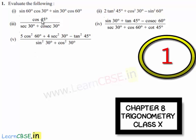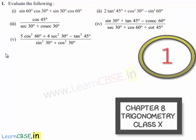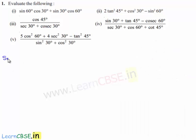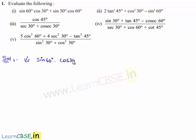Moving on to the first question: evaluate the following. Here he has given 5 bits, so let us find the solution individually. Now finding the solution for the first bit: the question is sin 60° × cos 30° + sin 30° × cos 60°.